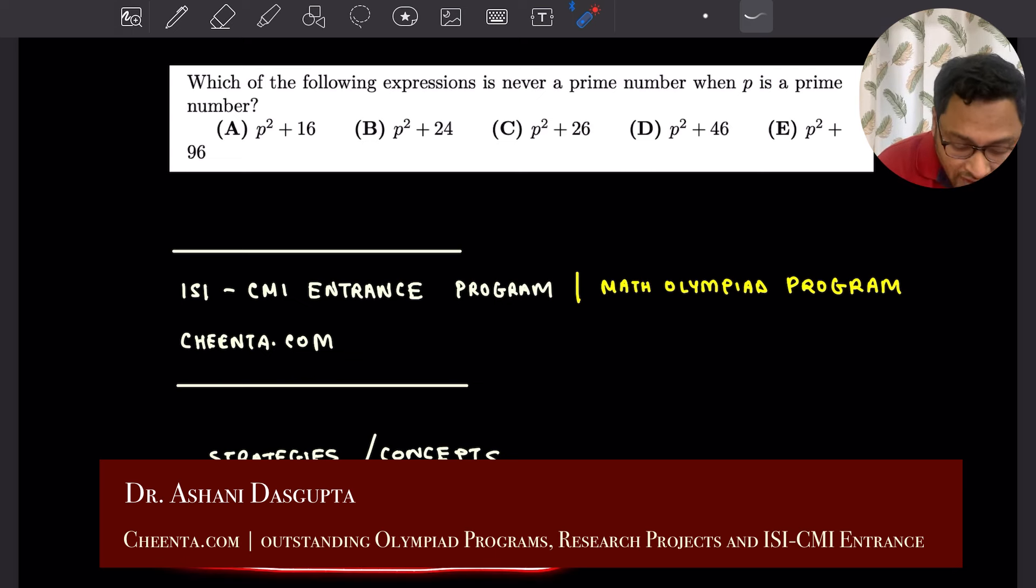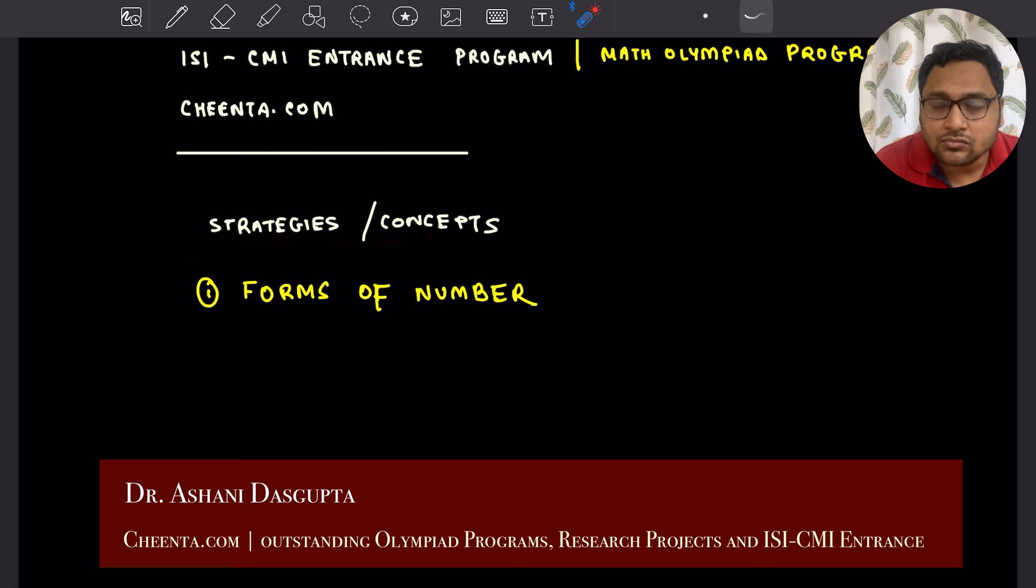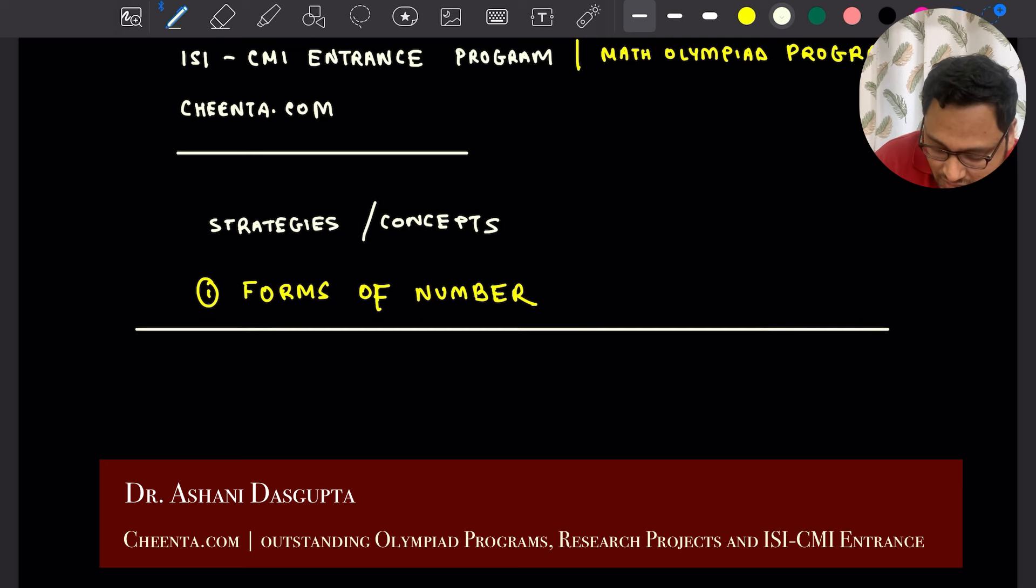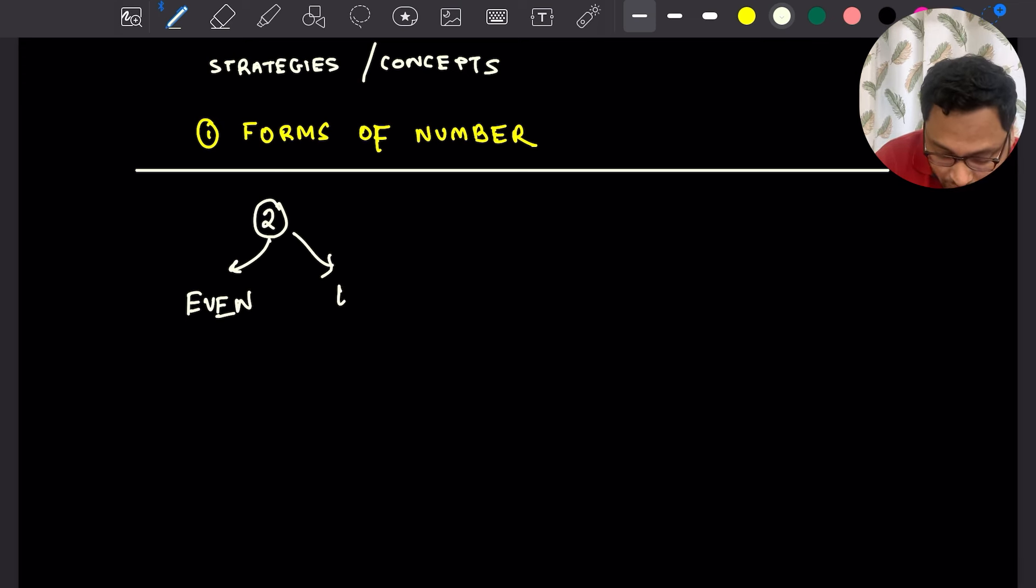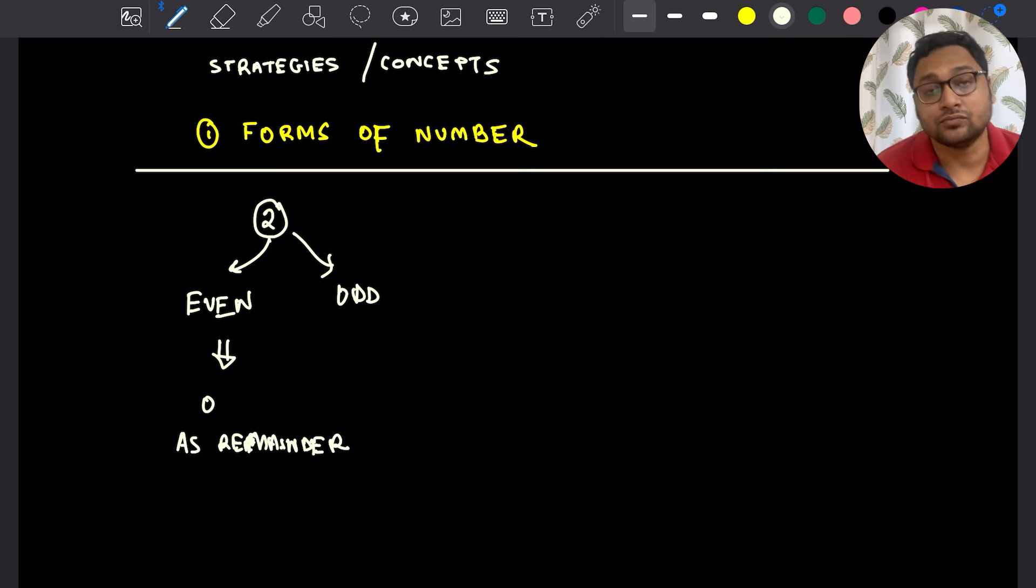It's called forms of a number. What is it? That's what we will talk about and then we will use it to actually solve the problem. If you have the number 2, using the number 2, you can categorize all integers into two groups. If you think carefully, even numbers are those numbers which produce 0 as a remainder when you divide by 2.